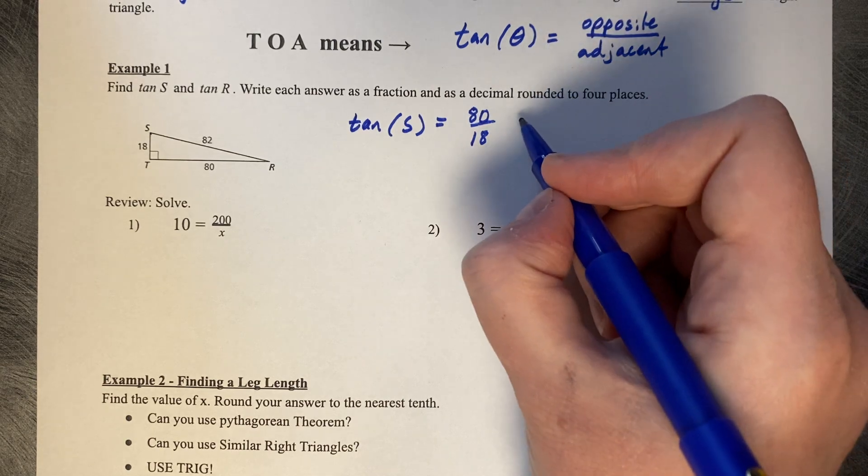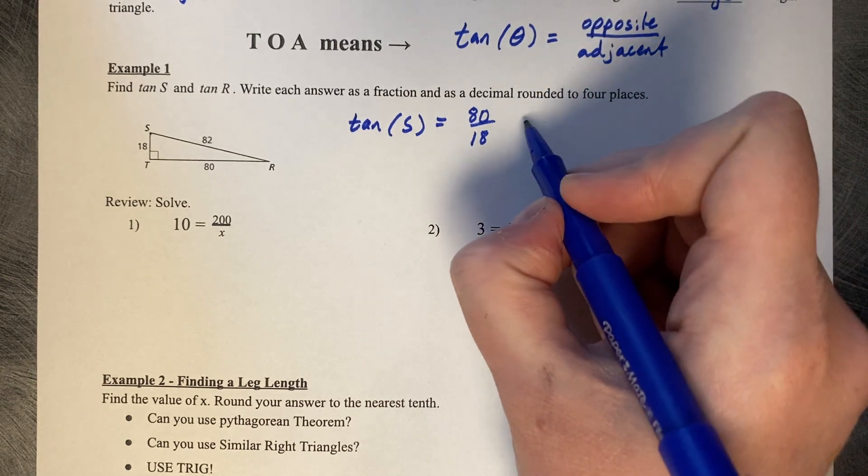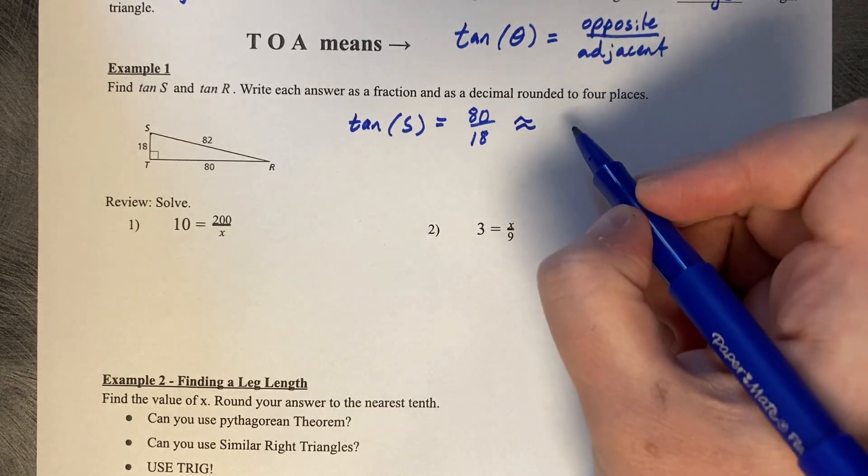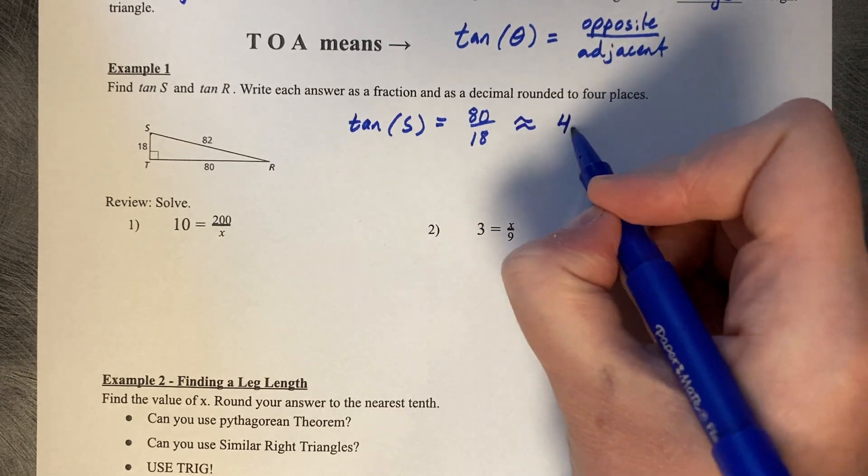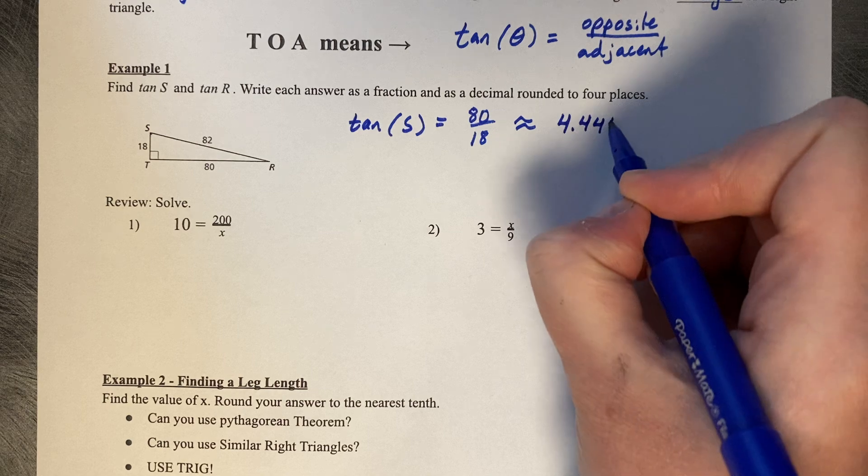It also wants us to round it to four decimal places, so that's approximately 4.4444.